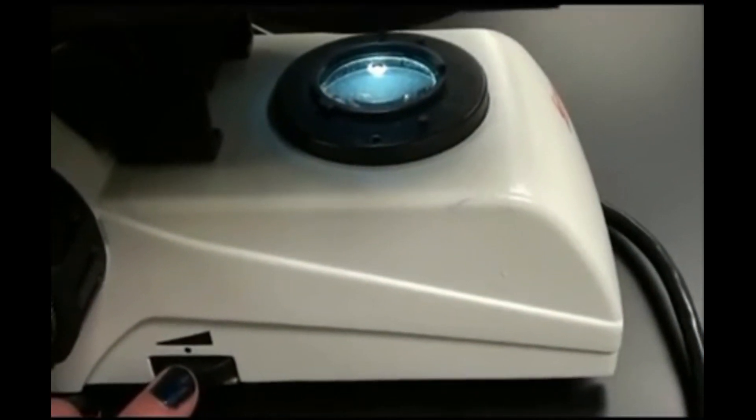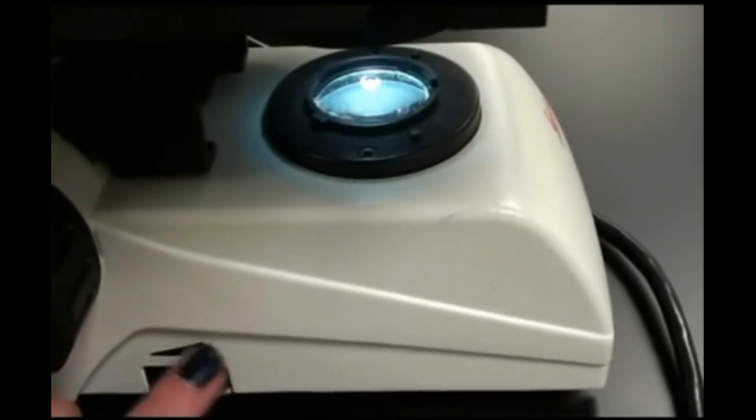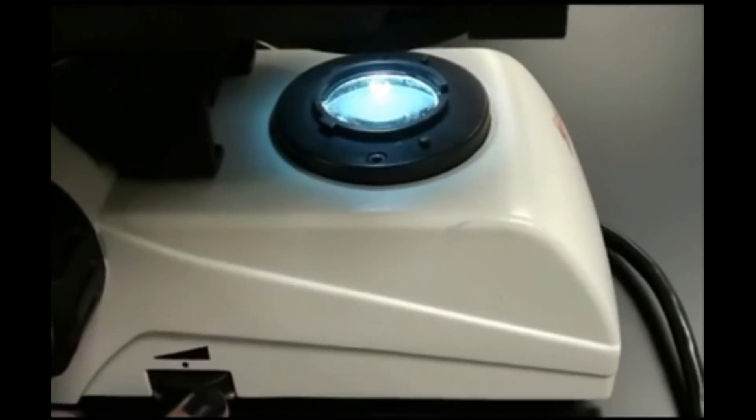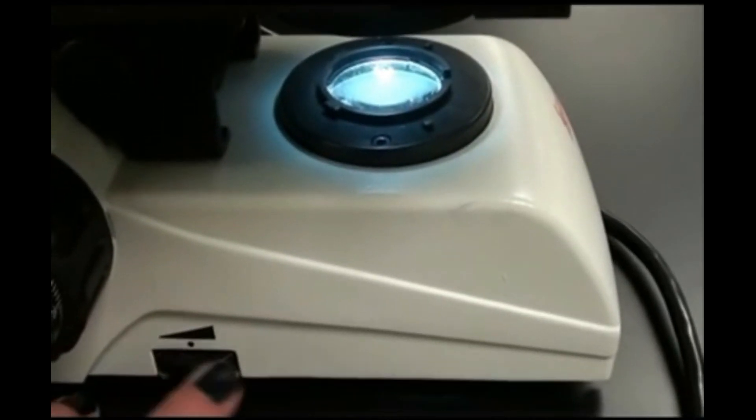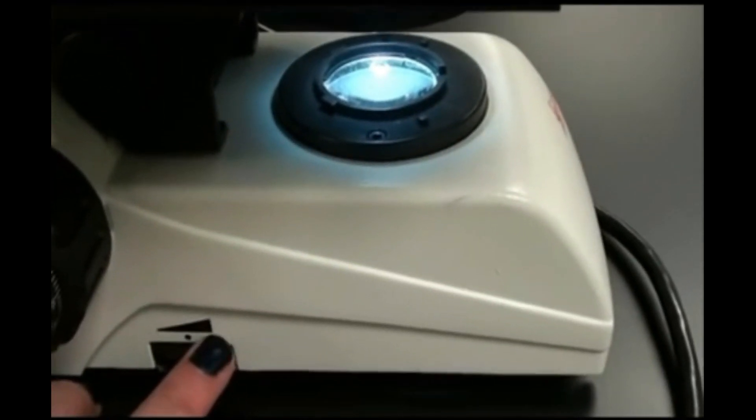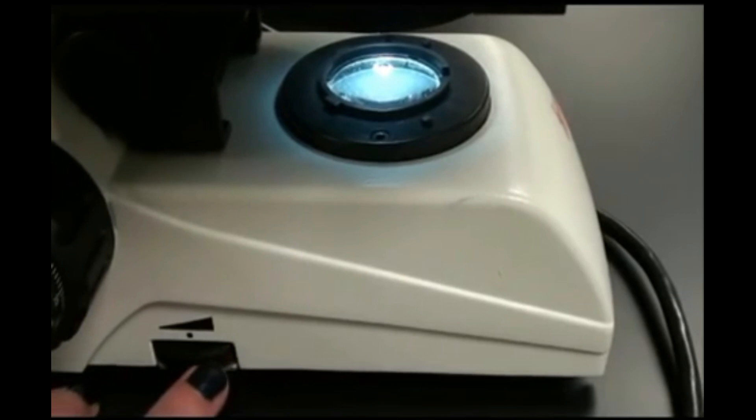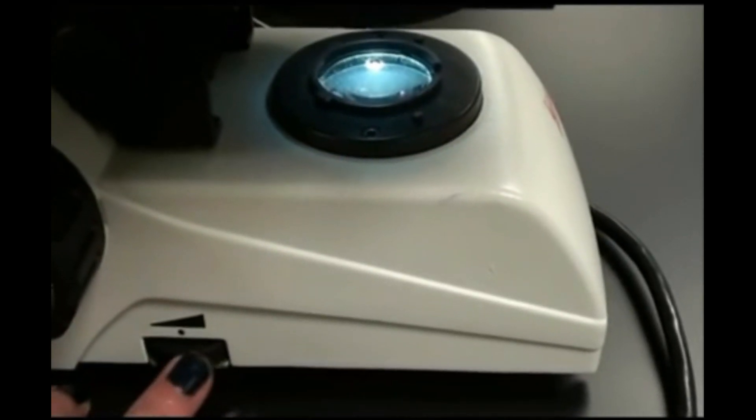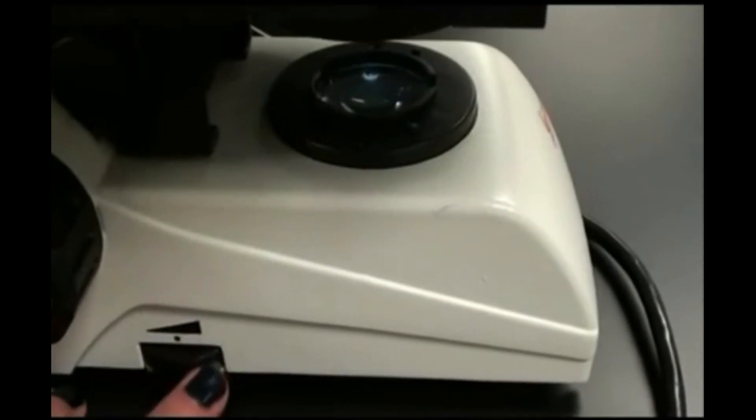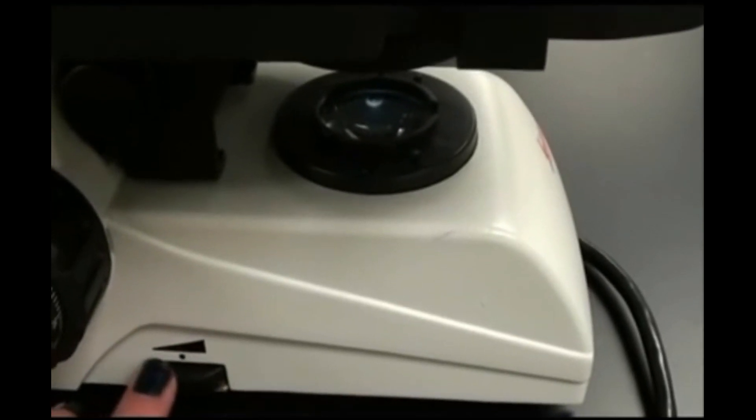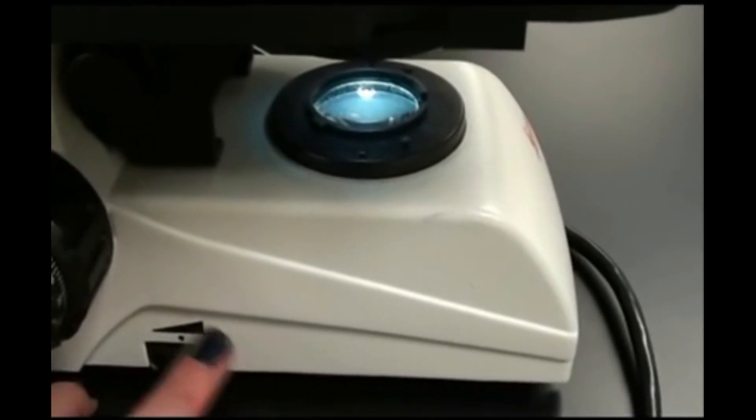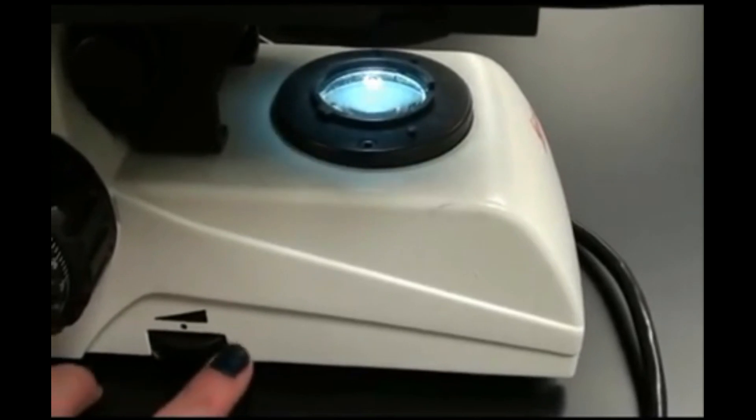Understanding how to adjust the amount of light that is shining through your specimen is an extremely important skill to have. Too much light and your specimen can be washed out. Too little light and there is not enough illumination to see it. Adjusting the light allows you to manipulate contrast. That is the difference in the visibility of your specimen versus the background.